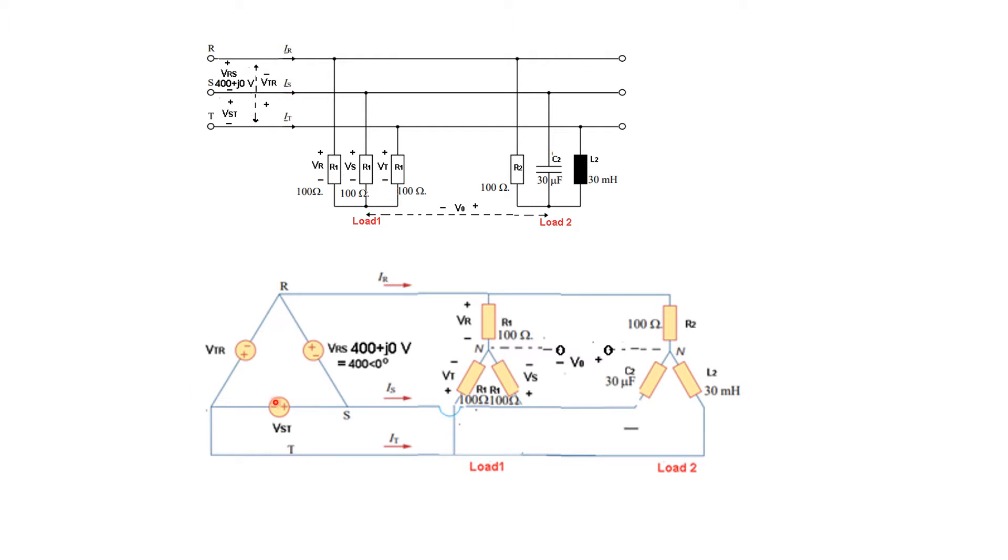This input is actually Delta connected, as you can see. I have made a Delta connected input where one voltage VRS is given. There are two sets of loads: load 1 is purely resistive and Y-connected, while load 2 is a resistance-reactance combination, also Y-connected. This is the circuit we will be following.